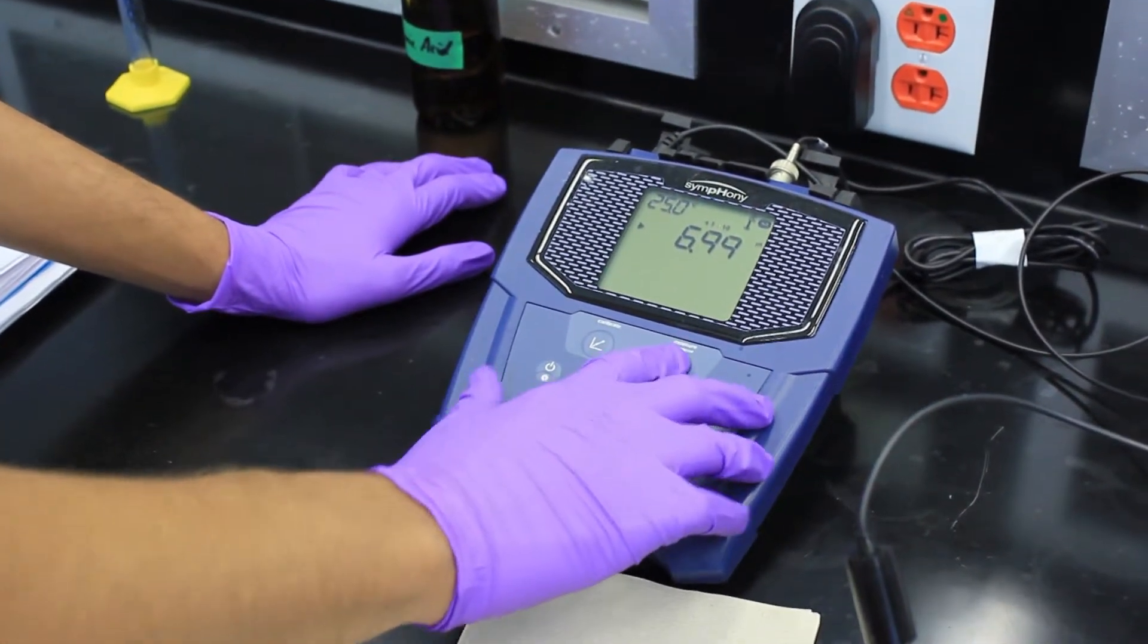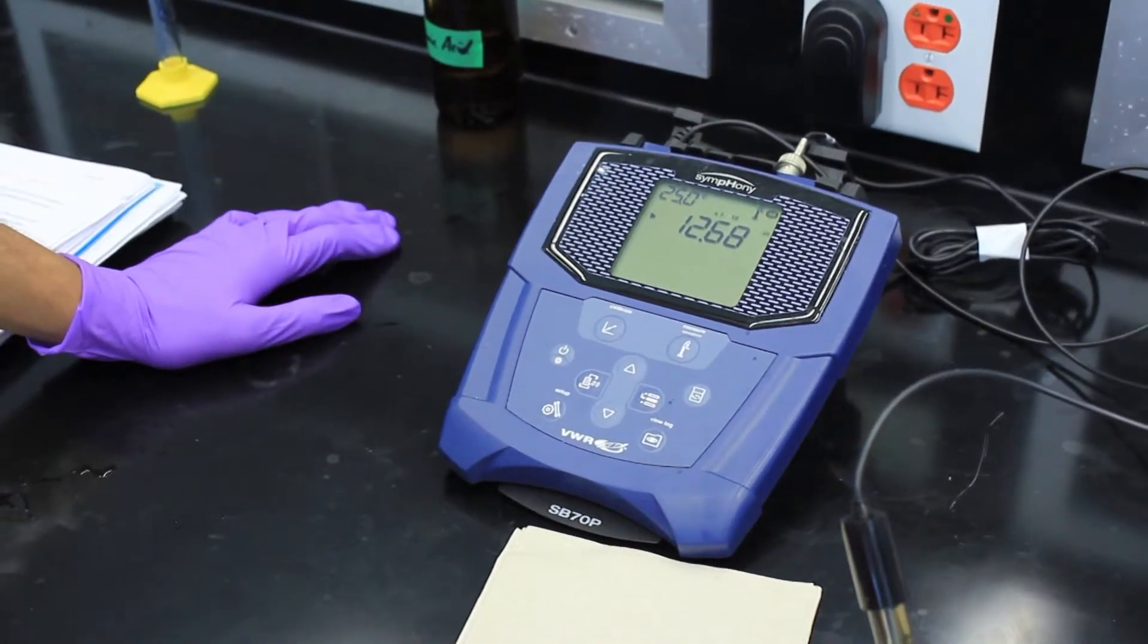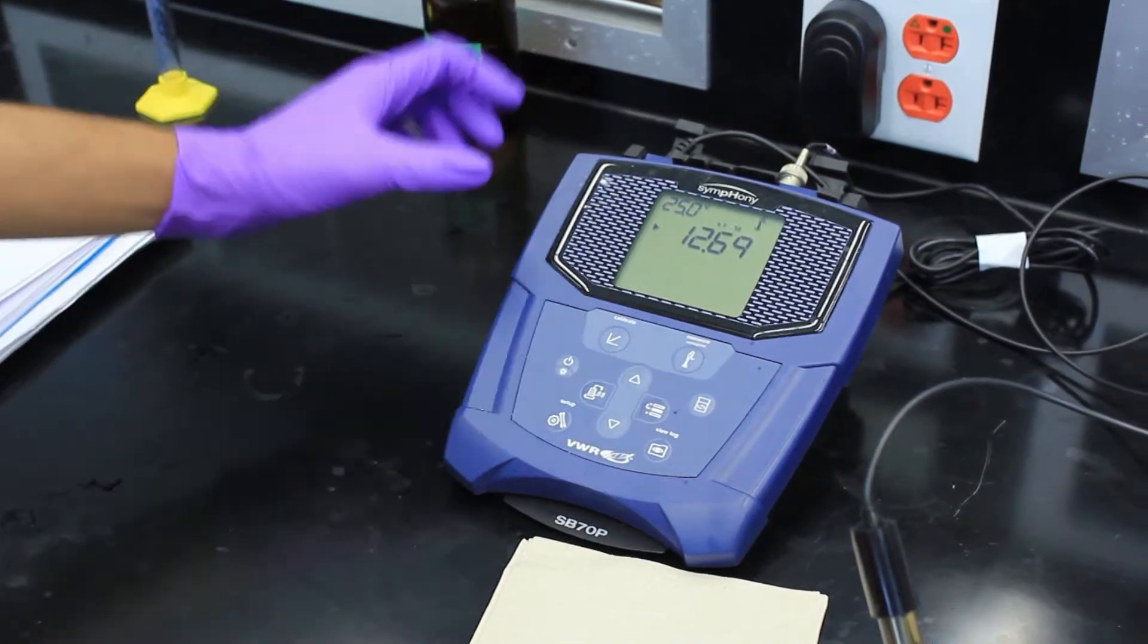You press measure and wait. Once the pH stabilizes, it will show you the actual pH, which will be the last number on the screen.